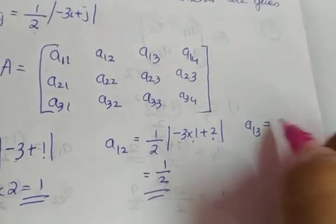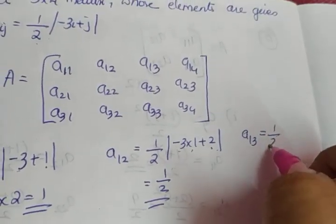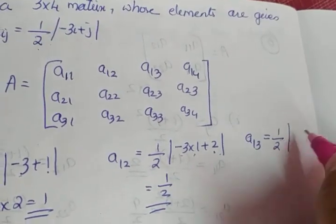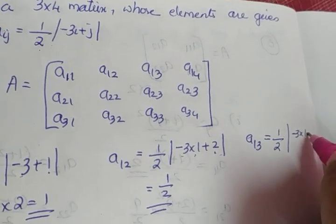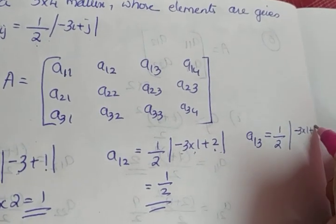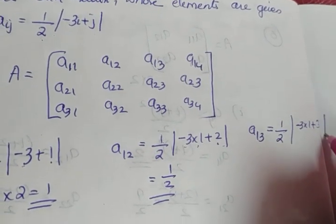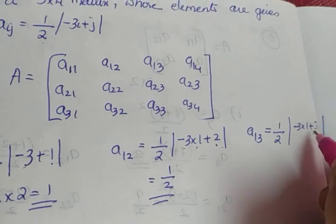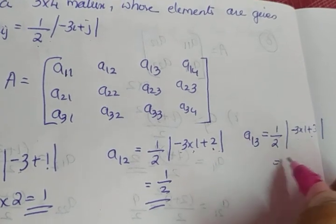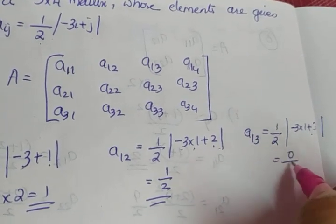A13 is 1 by 2 into modulus of minus 3 into 1 plus 3. Minus 3 plus 3 gives you the value 0. So A13 is 0.